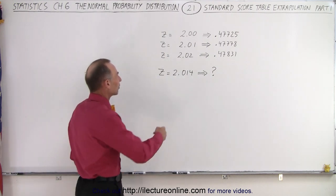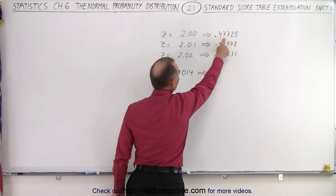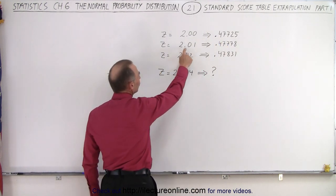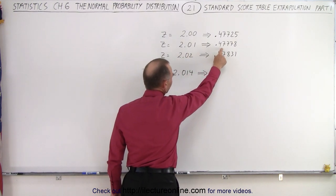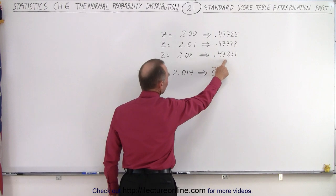So for example let's say our table tells us that for Z equals 2.0, the corresponding value is 0.47725. For Z equals 2.01, the corresponding value is 0.47778. And for Z equals 2.02, it is 0.47831.